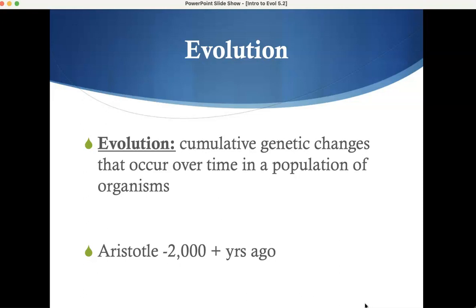If you're paying attention, you realize that organisms change, and we've been paying attention for a while. There are also a couple of levels of evolution: there's micro and there's macro. Micro is change within a particular type of organism, and macro is change from one type to another. Usually macro is the one people have problems with.